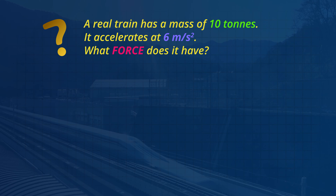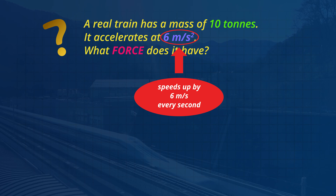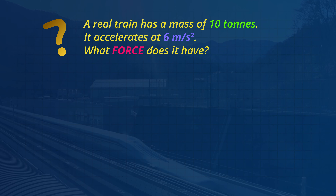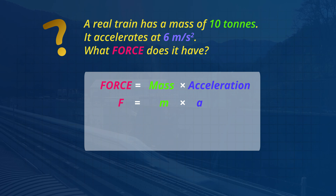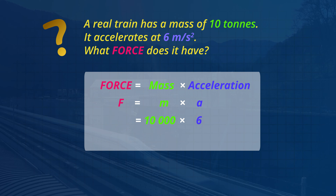In this example, a real train obviously has more force than the toy train. But why is this? Well, a real train has a greater mass than a toy train and it can accelerate faster because of its more powerful engine. Using the rule: the force equals the greater mass of 10 tons — that's 10,000 kilograms — multiplied by the greater acceleration of 6 meters per second squared. The real train has an enormous force of 60,000 Newtons. It could knock over a large truck.